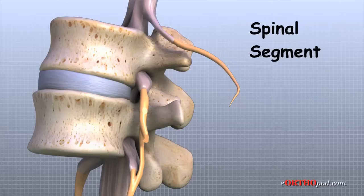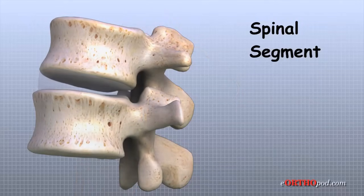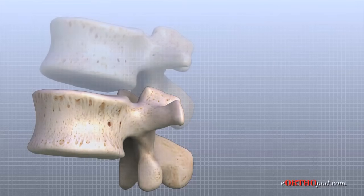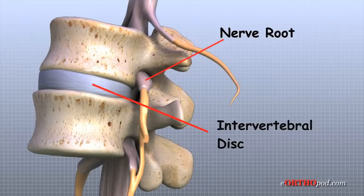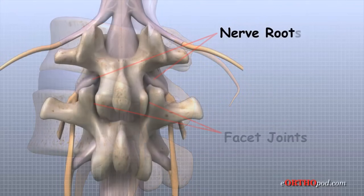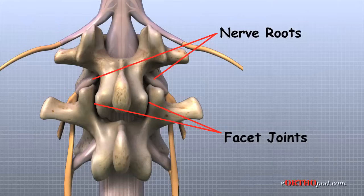It is sometimes easier to understand what happens in the spine by looking at a single spinal segment. The spinal segment includes two vertebra, the intervertebral disc between, the two nerve roots that leave the spinal cord at that level, and the small facet joints that link each level of the spinal column.